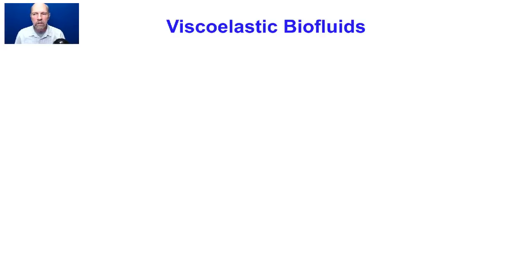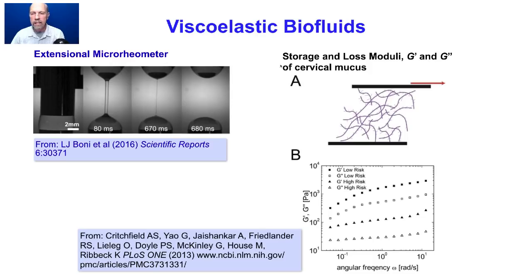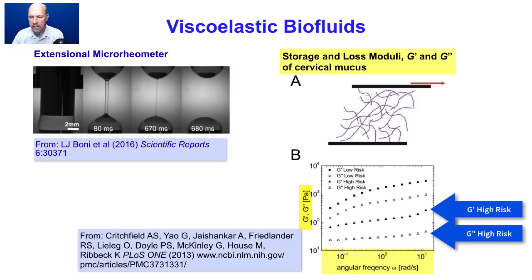We will briefly discuss bioviscoelastic fluids, which can be measured with a viscometer but also with specialized devices such as an extensional microrheometer, which pulls a droplet of bioviscoelastic fluid out rapidly until it breaks. A common viscoelastic fluid studied in biology is mucus. For example, the storage and loss moduli of cervical mucus measured in a cone-plate viscometer at different angular frequencies show that pregnant women at higher risk of preterm birth have lower storage and loss moduli at all frequencies than those at low risk.